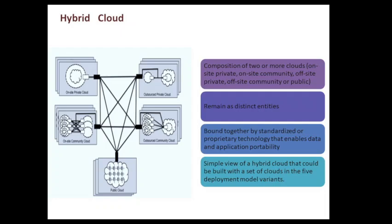We have the architecture of hybrid cloud, a composition of two or more cloud modes. We have on-site private, on-site community, off-site private, off-site community, or public. But all these clouds remain as distinct entities. They are bound together by standardized or proprietary technology that enables data and application portability.